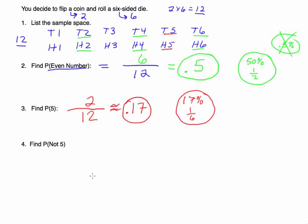The last thing to discuss is the probability of not getting a five — this is called the complement of getting a five. Let's count the outcomes without a five: there are ten. So ten out of twelve gives approximately 0.83. The probability of getting a five was 0.17, and the probability of not getting a five is approximately 0.83.